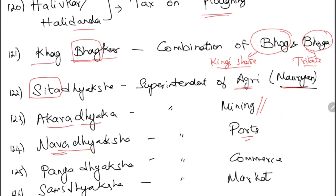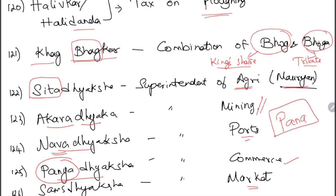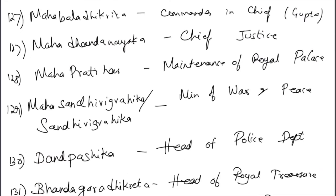Nava-adhyaksha was superintendent of ports — easy as 'nava' relates to navy. Panya-adhyaksha was superintendent of commerce — 'panya/pana/panam' all relate to money and trade. Samsthadhyaksha was superintendent of markets. A useful clue: the suffix '-adhyaksha' mostly appears in the Mauryan period; 'Maha-' prefix mostly in the Gupta period. Mahababaladhikrita was commander in chief in the Gupta period.